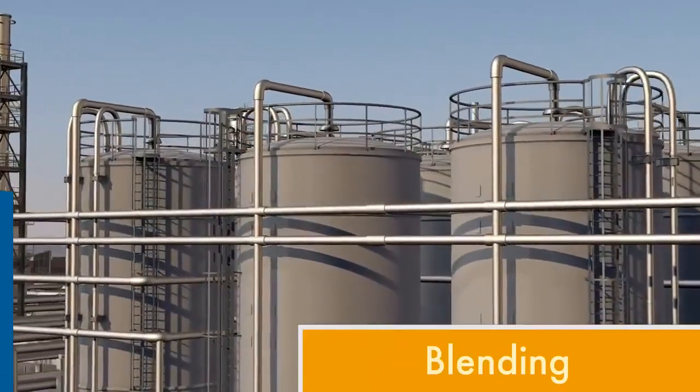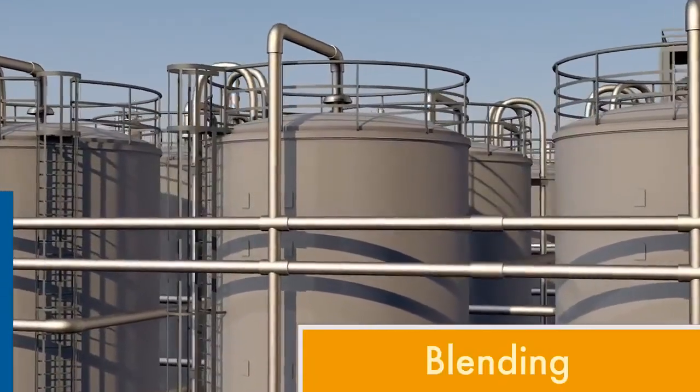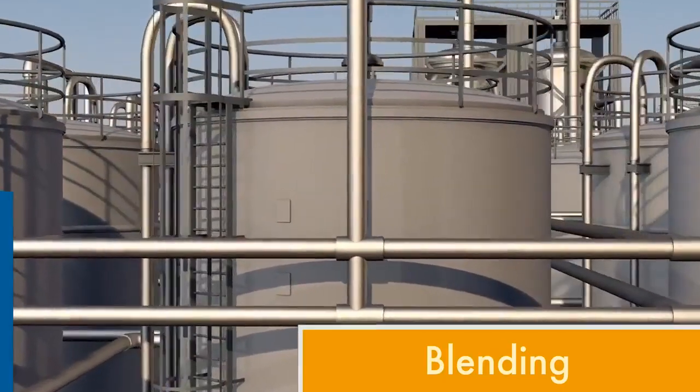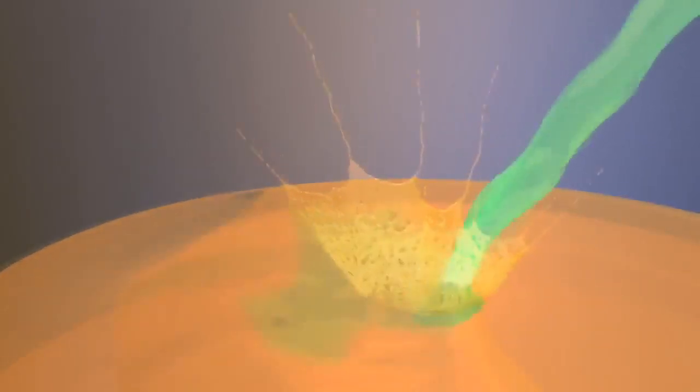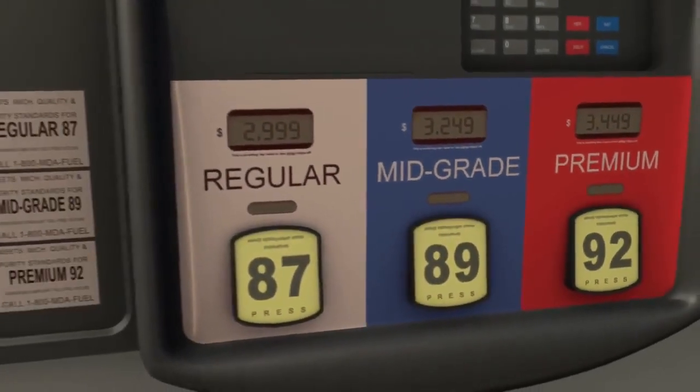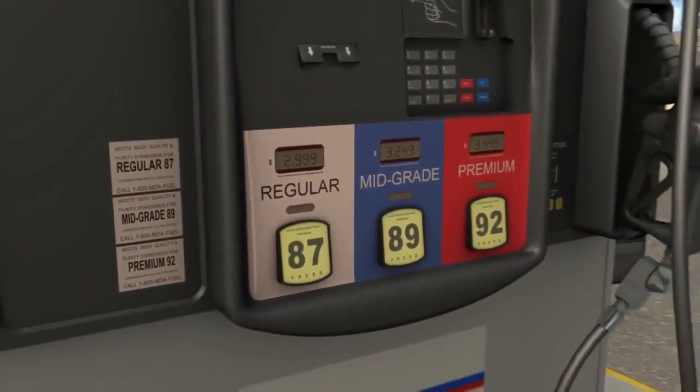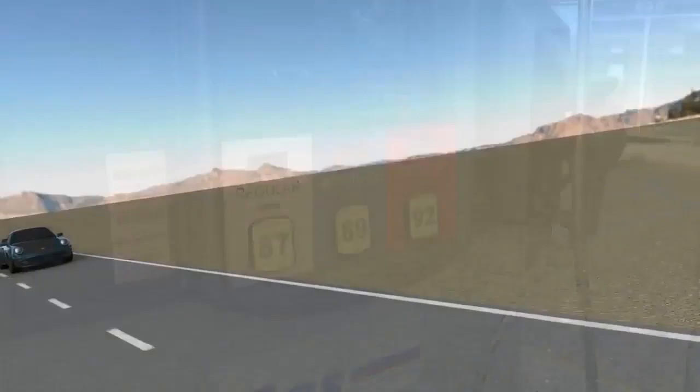Blending is a process of mixing different refinery products to make finished petroleum fuels. Gasoline, for example, is blended to achieve octane standards, creating the grades of gasoline you see at the pump – regular, mid-grade, and premium – that are necessary to meet the needs of specific engine types.